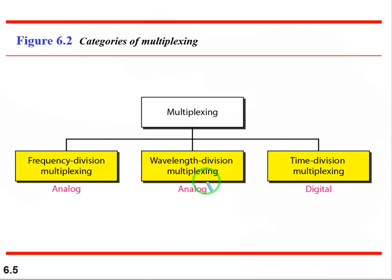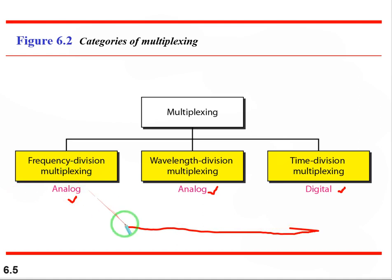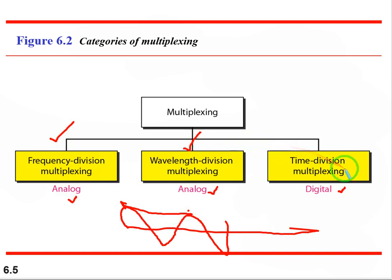The categories of multiplexing: frequency division multiplexing uses analog signals; wavelength division multiplexing also uses analog signals; and time division multiplexing uses digital signals. FDM is analog because frequency involves waveforms, and finding wavelength requires a crest or trough — so both FDM and WDM are analog, while TDM is digital.